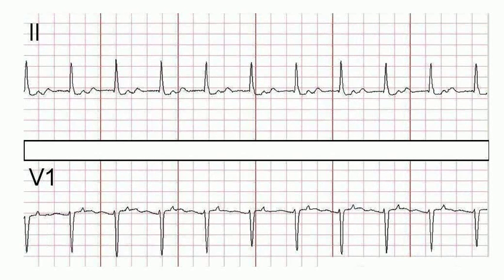Going back to the featured strip. In this particular setting, we are looking at a strip that wasn't captured in the middle of a Wenckebach cycle. Remember that the heart is continuously beating — the ECG is like a photograph or a snapshot of cardiac electrical activity. In this featured case, what I would like to point out is that a Wenckebach captured in the middle of the cycle would look like first-degree AV block.